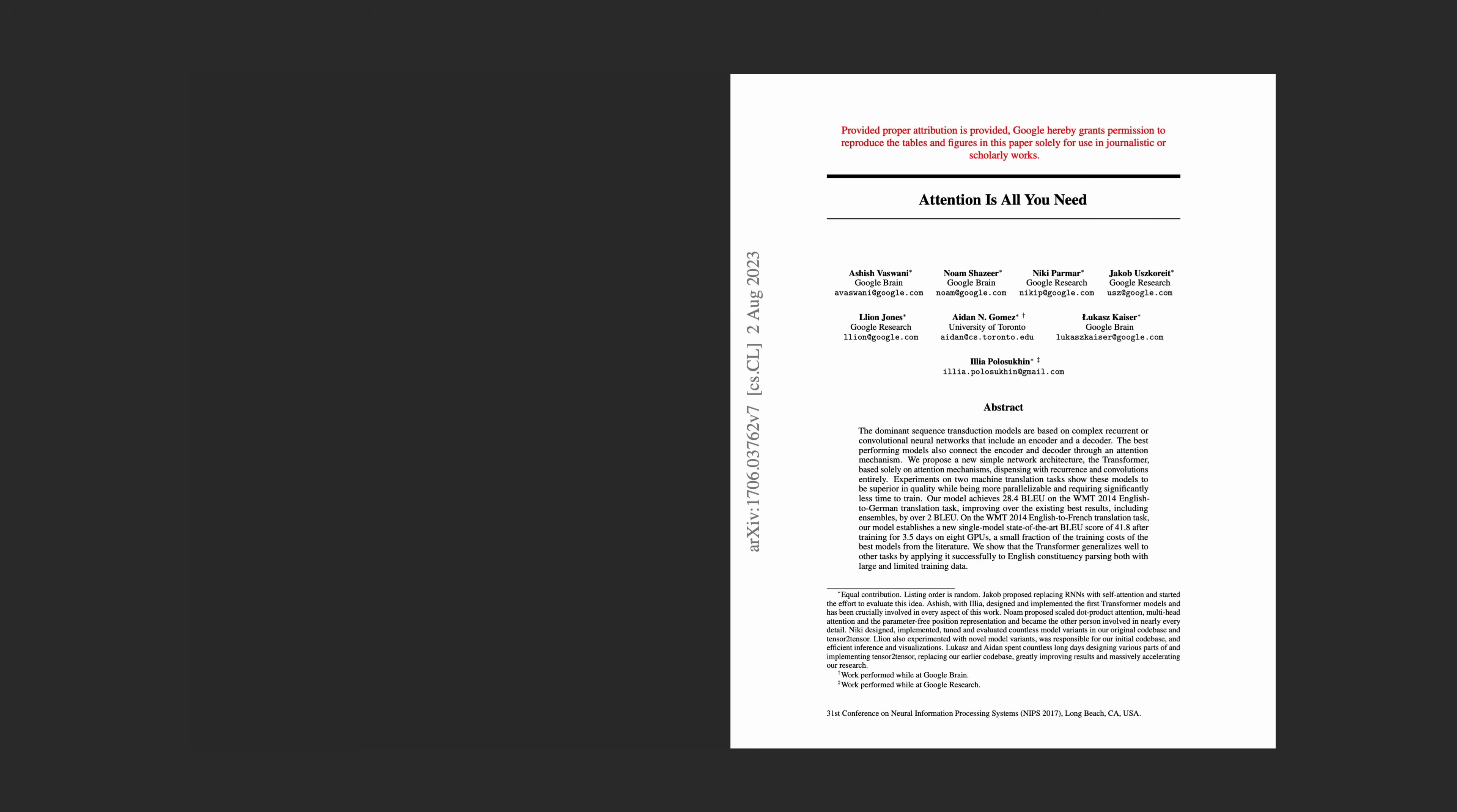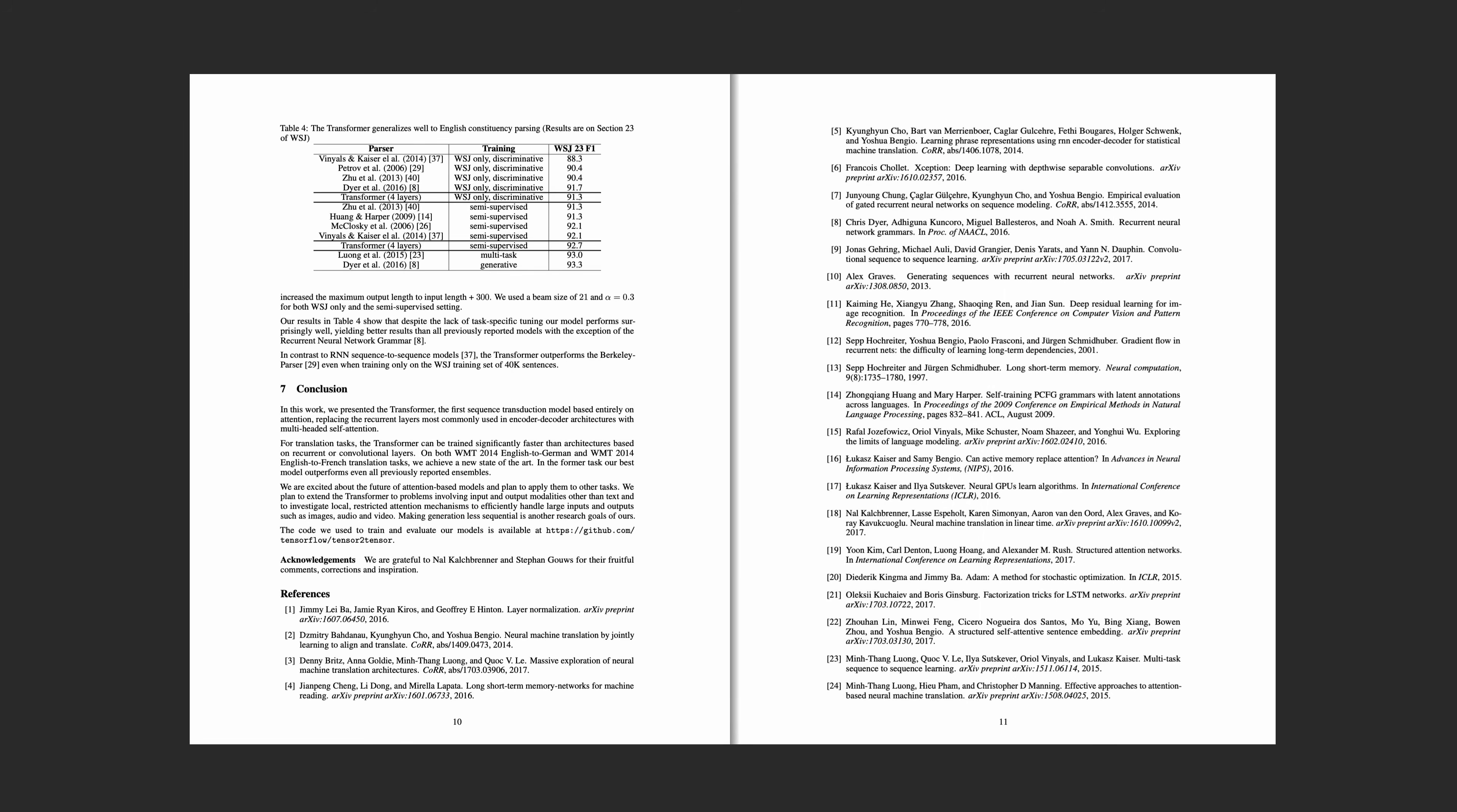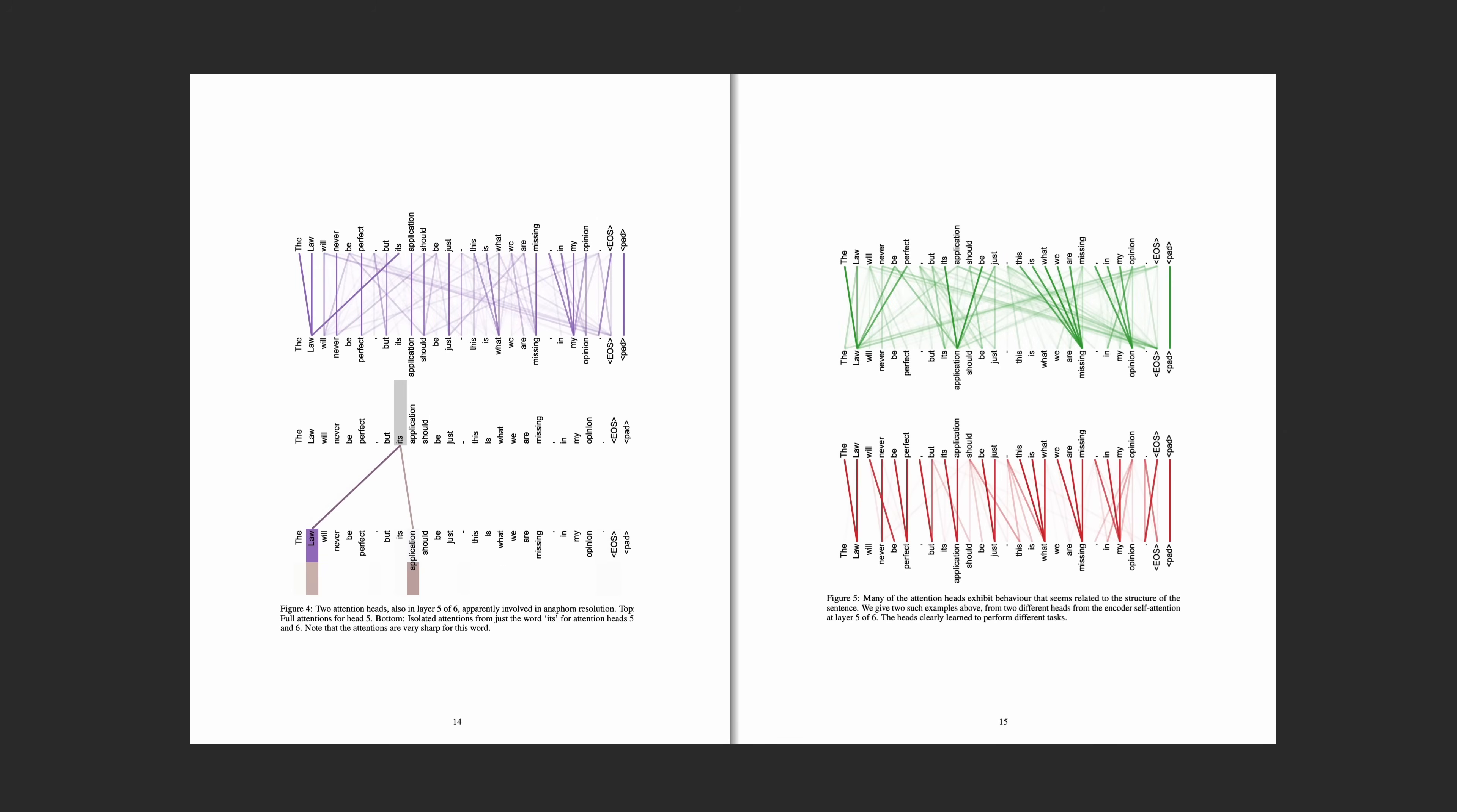So CNNs have a strong inductive bias. The opposite force to bias is variance, which is just a technical term for freedom or expressivity. Compared to the CNN, Transformer makes a very different trade-off: much lower bias, much higher variance. Transformers owe their low bias to self-attention, their basic building block. You might already be familiar with it in the context of language, but let's see how it applies to images.